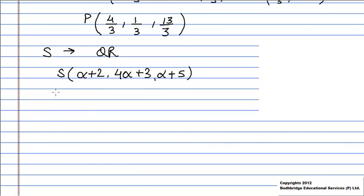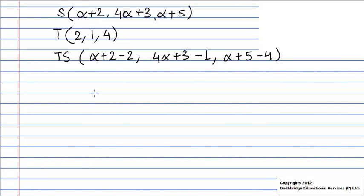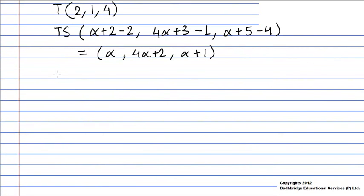Given that the point T is (2, 1, 4), the direction ratios of the line TS are (α + 2 - 2, 4α + 3 - 1, α + 5 - 4), which equals (α, 4α + 2, α + 1). Also, the direction ratios of the line QR are (1, 4, 1).